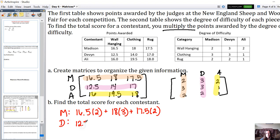For Devon, we've got 12.5 times 3, plus 14 times 3, plus 17 times 2. And then for Allie, 16 times 2, plus 19.5 times 1, plus 18 times 1. And now we can go in and see who actually won the entire competition.